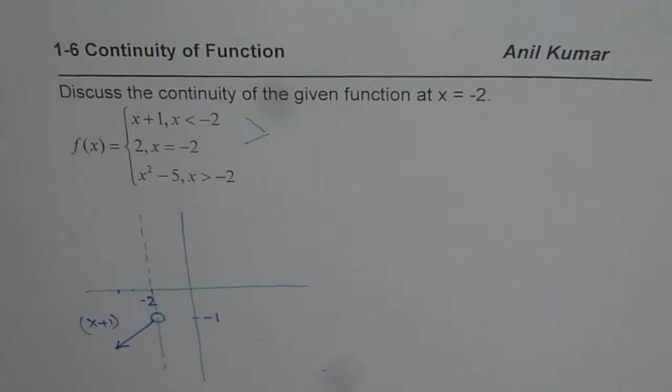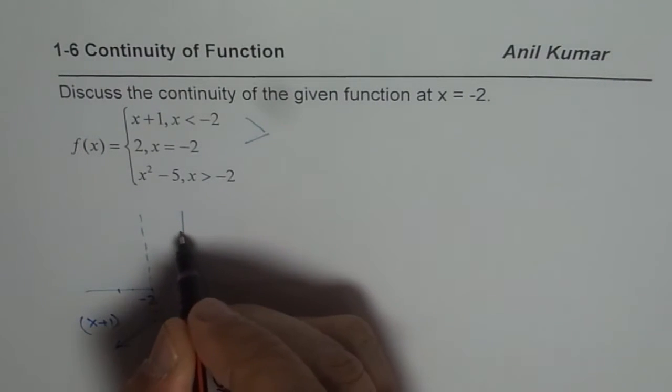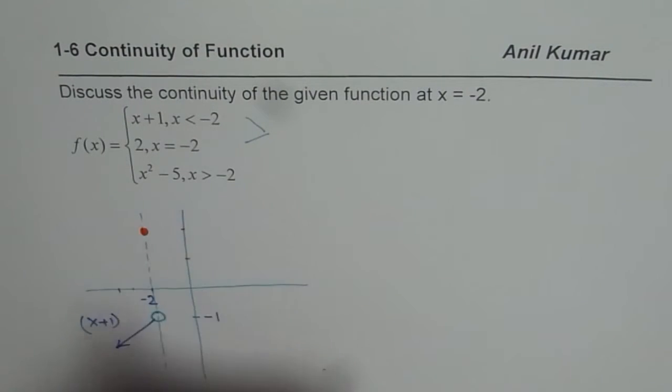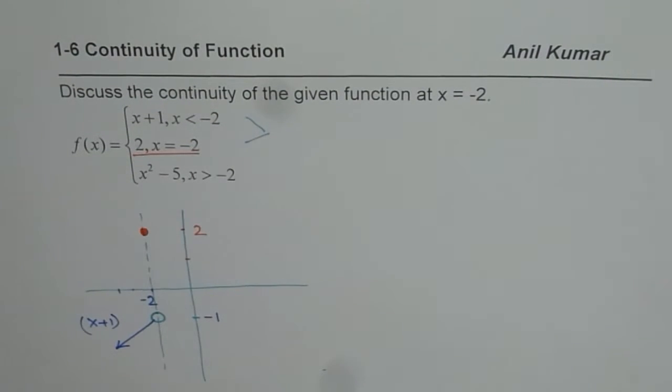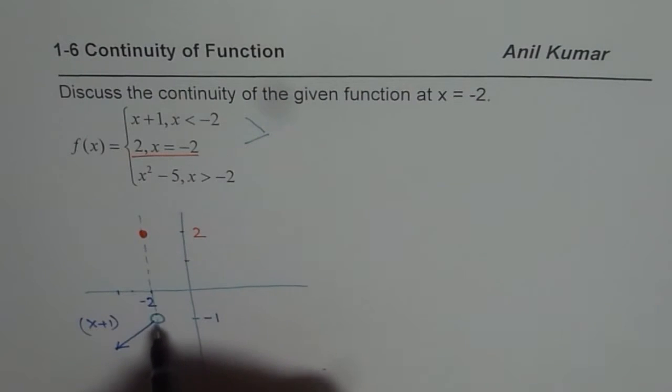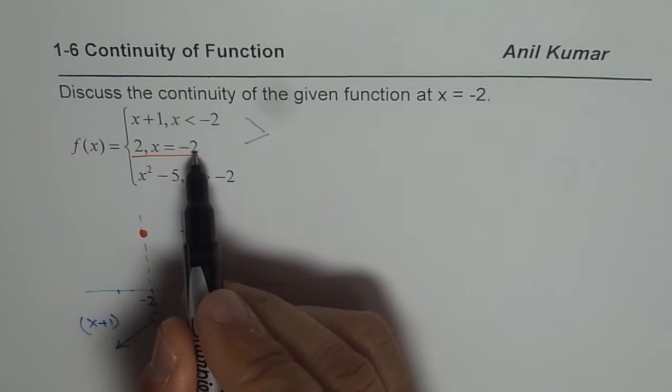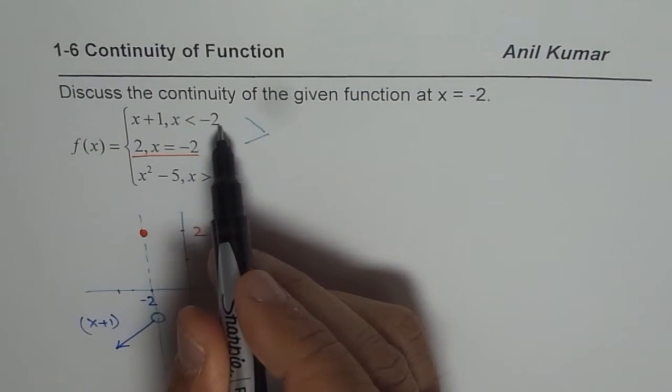Now let us look into the second part of the piece which is at minus 2, the value of the function is 2. So this is minus 1, this is plus 1, this is 2 for us. So at minus 2, we have a filled in point where the value is 2. So this is the second part. Clearly you can see that they are not matching. So the value of the function at minus 2 does not really fill in the hole which we had because of the first piece.